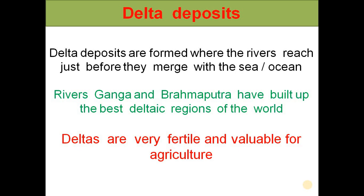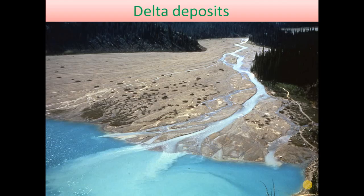Delta deposits are also formed where rivers reach just before they merge into the sea or ocean. The best example in India is the rivers Ganges and Brahmaputra, which have built up some of the best deltas in the world. Deltas are very fine, fertile lands and valuable for agricultural purposes.